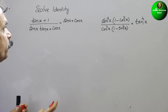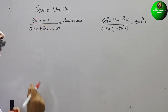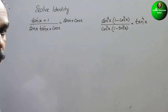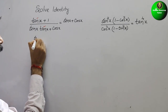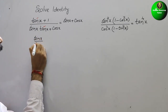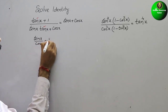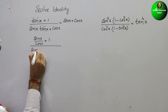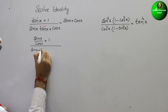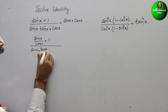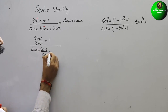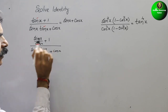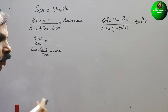So here if you see, this is tan. We will convert this tan into sin by cos. That is sin x, and tan x is sin x by cos x, plus cos x. So here we will take the LCM, and the LCM is cos x.